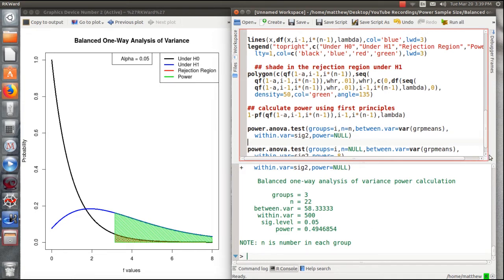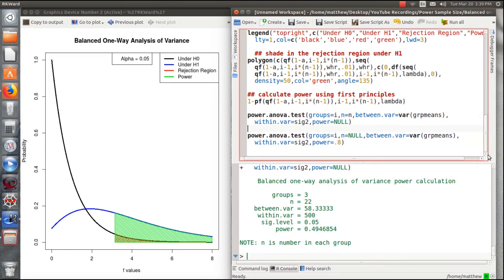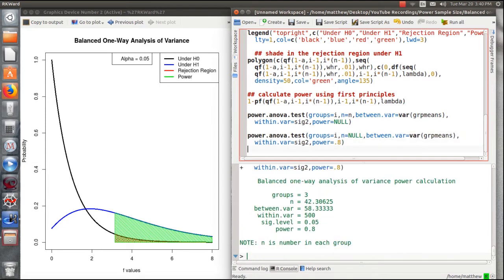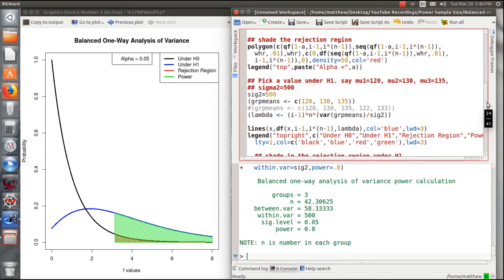So then you may say, in this setting, three groups, group means that we set up there, 120, 130, 135, or something like that, and we want 80% power, what sample size would we need? We would need 43 observations per arm to have 80% power. Now let's go through another example.